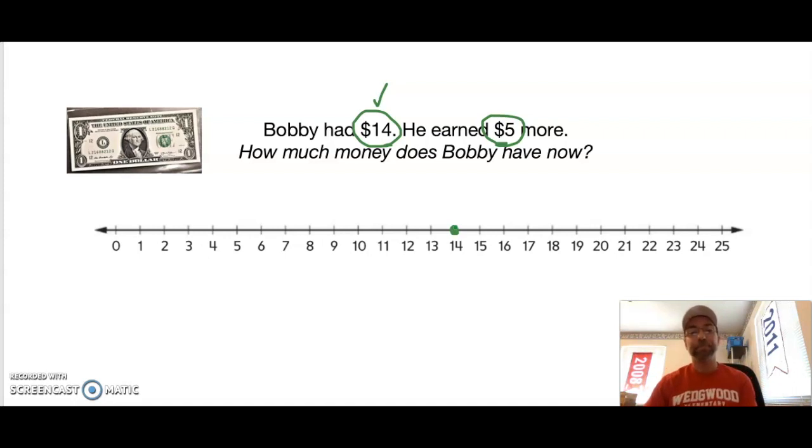Go ahead and use your sheet protector, use the top number line and put a dot where 14 is located. Bobby had 14 and we marked it on our number line. He earned $5 more, so Bobby's getting more money, he's getting greater amounts. I have to make some hops—I have to make five hops. Since he earned more money, we're gonna be heading to our greater numbers.